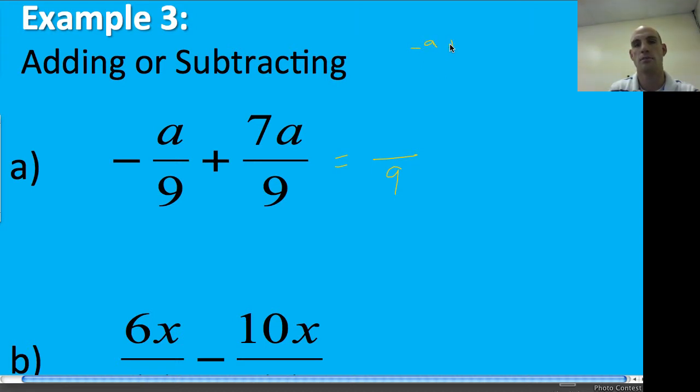So I have negative A plus 7A. So I have two opposite signs and I'm adding. So I'm going to subtract the easy way and I'm going to keep the sign of the larger absolute value, which is 7A. So it's going to be 6A over 9.